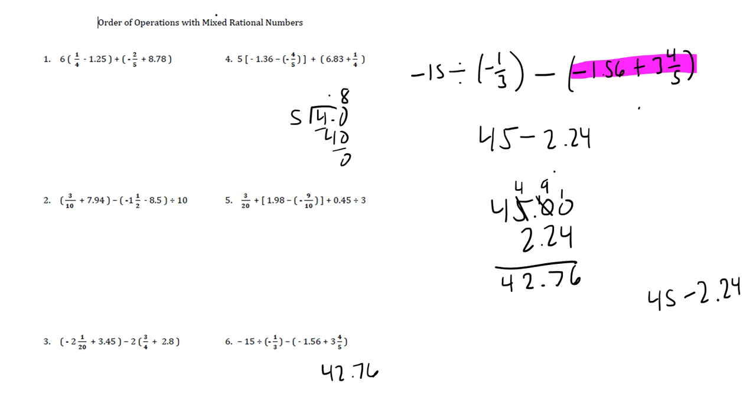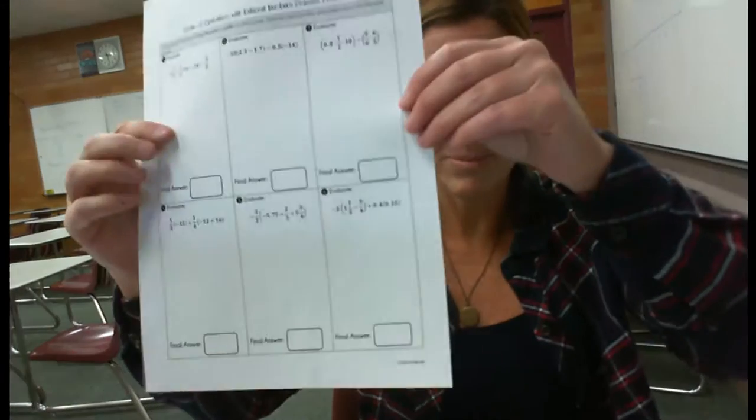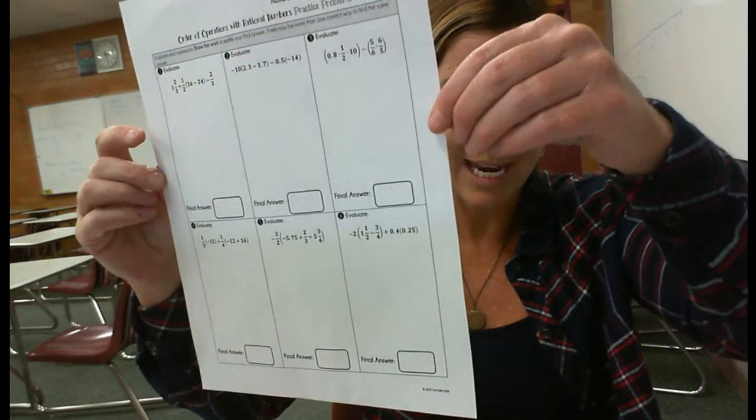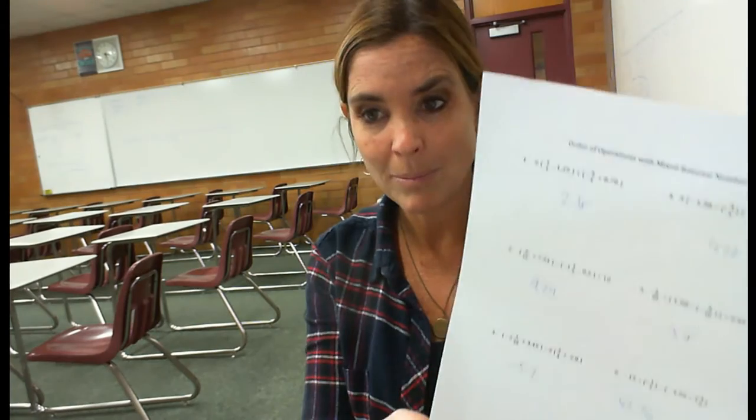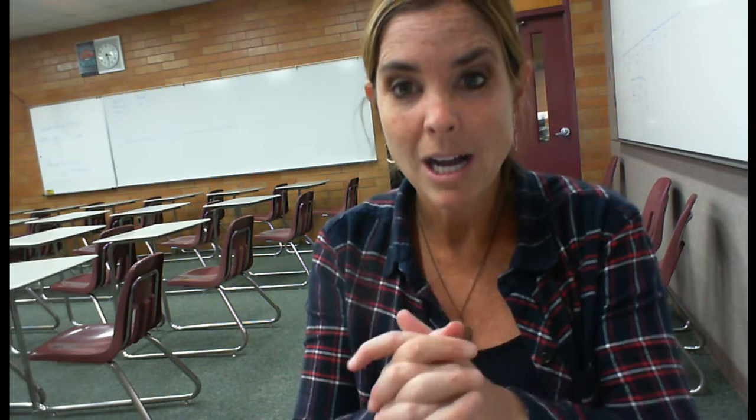Now, at this point, what I need you guys to do is you are going to finish the three problems that I didn't do on this side. And you are going to finish the two problems that I didn't do on this side, the order of operations with mixed rational numbers. Then you are going to come check off your practice with me. I'm going to check and see if you got it right. And I want to make sure that you're proficient at this skill. And then you'll move on to your next assignment in the module.